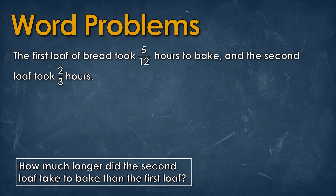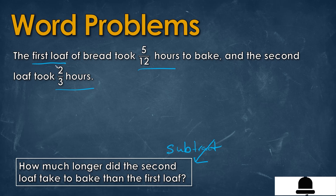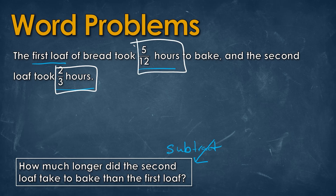For the next problem, it's good to read the question first. It asks how much longer did the second loaf take to bake than the first — this means we're going to be subtracting. The first loaf took 5 over 12 hours to bake and the second loaf took 3 over 2 hours. Since it's asking how much longer the second took relative to the first, we set up 2 over 3 minus 5 over 12.